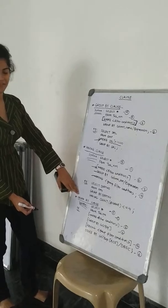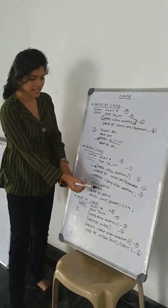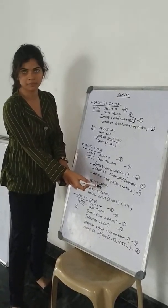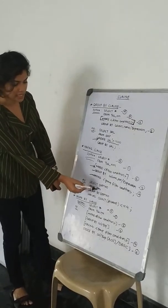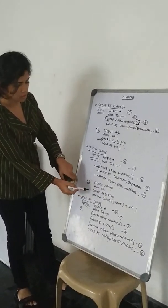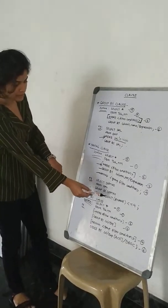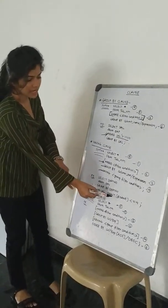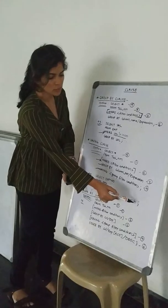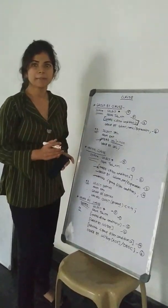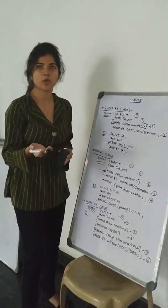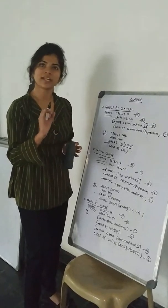I have taken an example for HAVING. I have selected department number column from the table EMP, from the employee. And I have taken the GROUP BY department number and HAVING COUNT EIN must be less than or equal to 4.